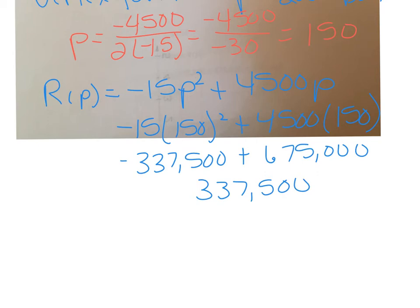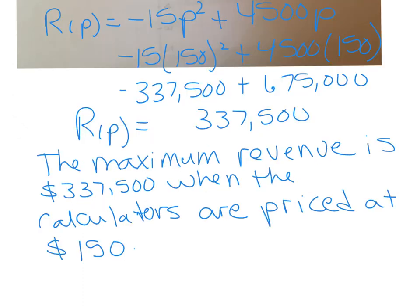So that's what R is going to be, or the maximum profit. We need to state that in a complete sentence. So we have our statement here. The maximum revenue is $337,500 when the calculators are priced at $150.